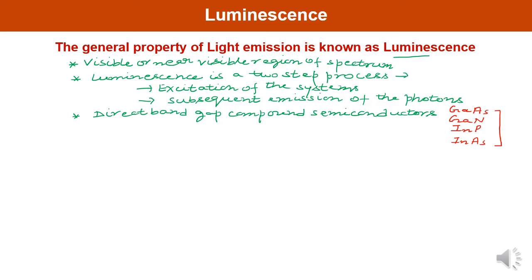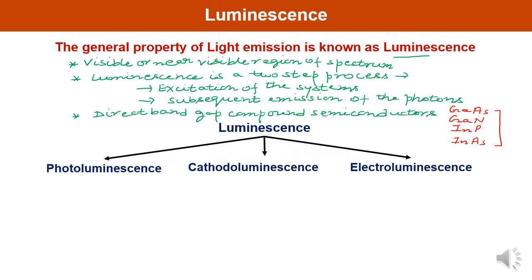Depending upon the excitation mechanism, luminescence can be divided into three important categories: first is photoluminescence, second is cathodoluminescence, and third is electroluminescence.